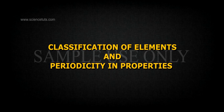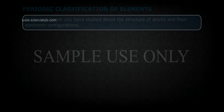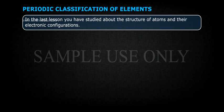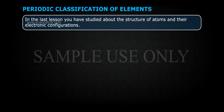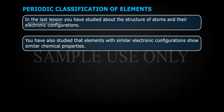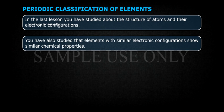Classification of Elements and Periodicity in Properties. In the last lesson, you have studied about the structure of atoms and their electronic configurations. You have also studied that elements with similar electronic configurations show similar chemical properties.